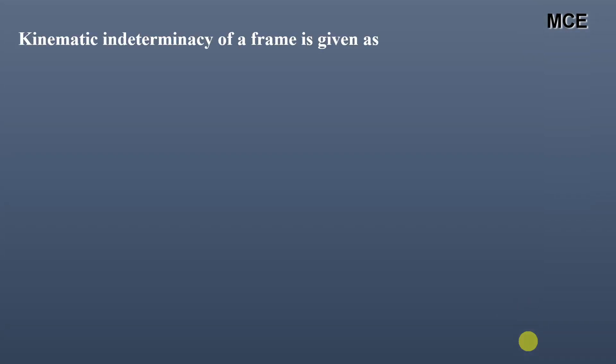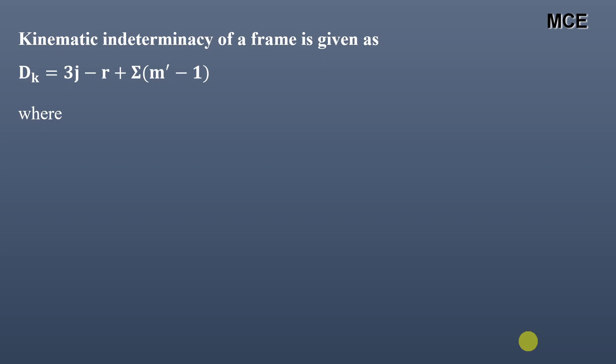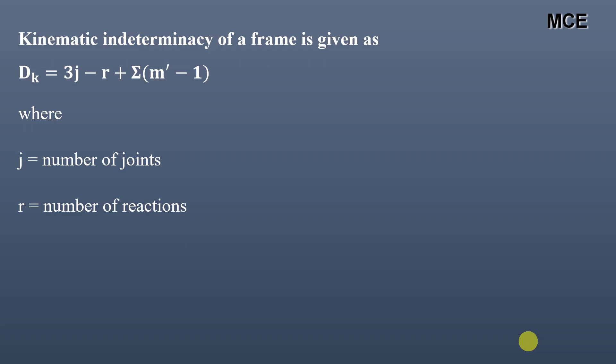Kinematic indeterminacy of a frame is given as DK = 3j − r + Σ(m′ − 1), where j is the number of joints, r is the number of reactions, and m′ is the number of members meeting at an internal hinge.